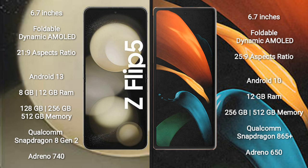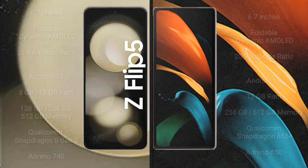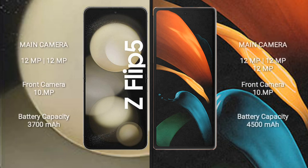The Samsung Galaxy Z Fold 2 is powered by a Qualcomm Snapdragon 865 processor with Adreno 650 GPU. The Samsung Galaxy Z Flip 5 has a dual camera setup with 12MP plus 12MP and a 10MP front camera. The Samsung Galaxy Z Fold 2 has a triple camera setup with 12MP plus 12MP plus 12MP and a 10MP front camera.